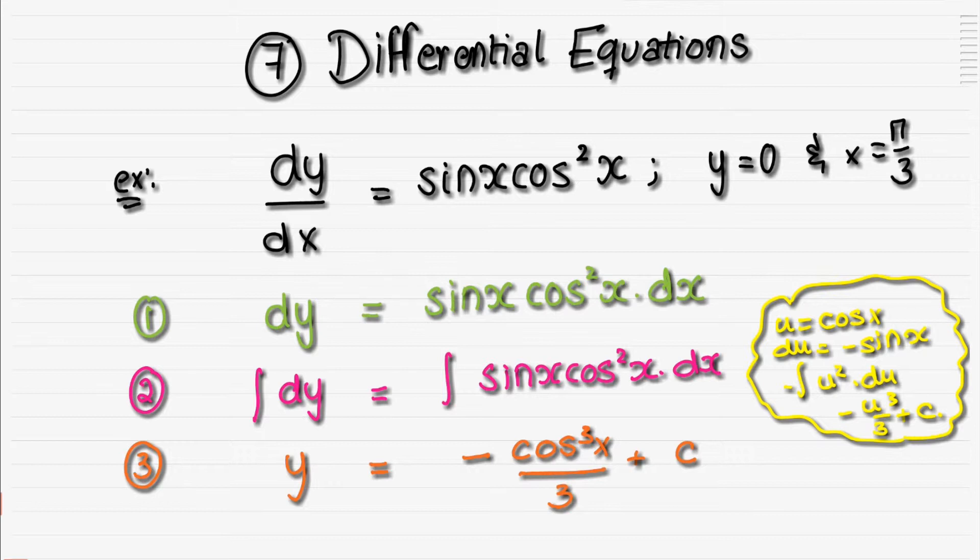Now what we're going to do is insert these boundaries we're given, so this will be 0, and this will be π/3, so minus cos³(π/3). Cosine π/3 is half, so half cubed is 1/8, 1/8 divided by 3 is 1/24 plus c, so minus 1/24 plus c. That means our c is actually 1/24, and that solves the problem.